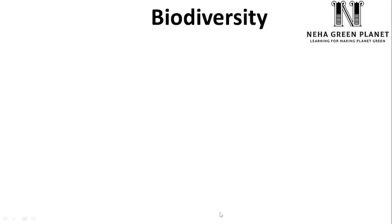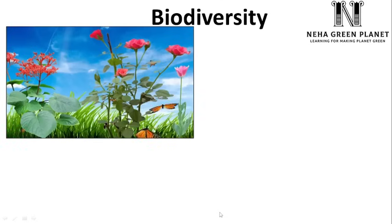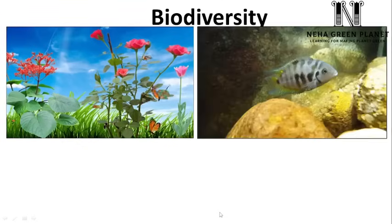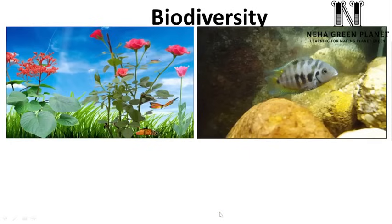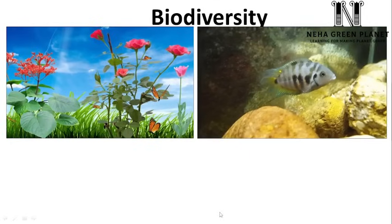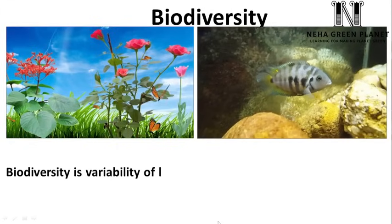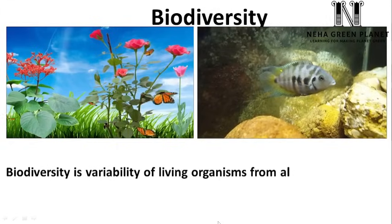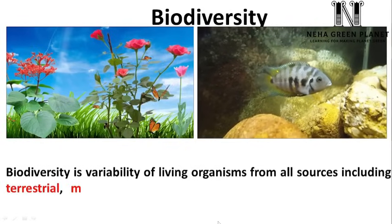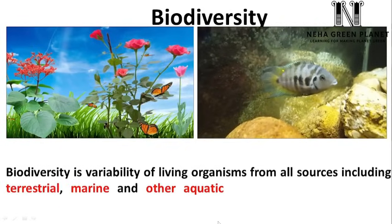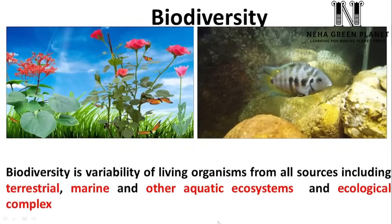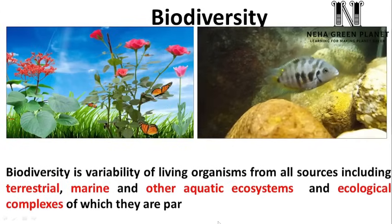Biodiversity is variation in life form that exists on earth — we find variations at all levels. On land there are different types of plants and animals; the same way, in aquatic ecosystems the diversity of life is really important. So biodiversity means variations and variability of living organisms from all sources, including terrestrial, marine, and other aquatic ecosystems, along with the ecological complexes of which they are part.